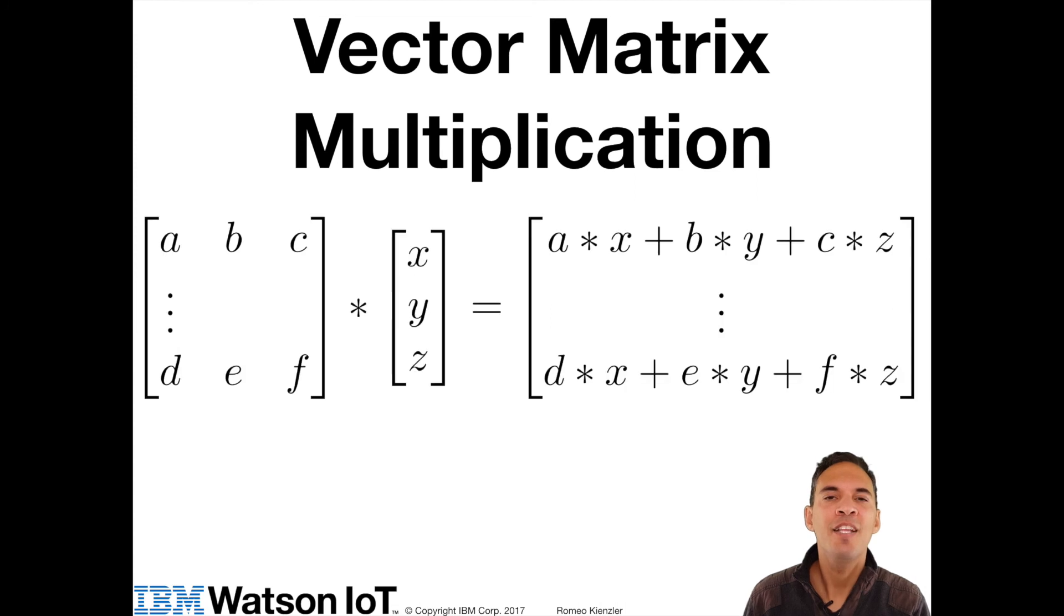So this is nothing else than two vector dot products calculated in one go, where the first vector is encoded in the first row of the matrix and the second vector in the second row. This is also very handy for SIMD or GPU instruction sets, where we can speed up those calculations dramatically. Also, the notation becomes more concise. As long as the number of columns matches the number of elements in the vector, we can apply this calculation for arbitrary factors.